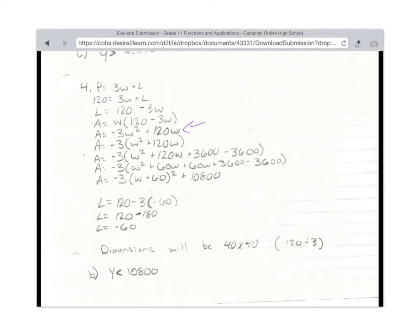It's when you're doing your common factoring right here that we're having trouble. If you divide a minus 3 out of each of these terms, you're going to get minus 3 times w squared. And then because it's plus 120w, you're dividing minus 3 out, you're going to get minus 40w. So now when you're completing your square, we have minus 3 times w squared minus 40w.